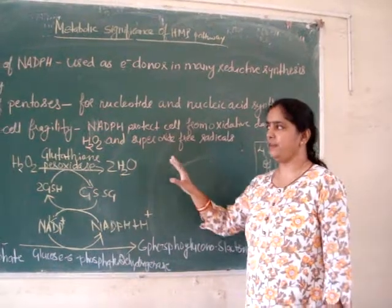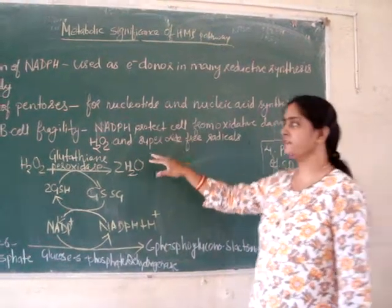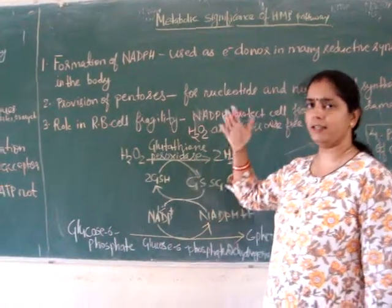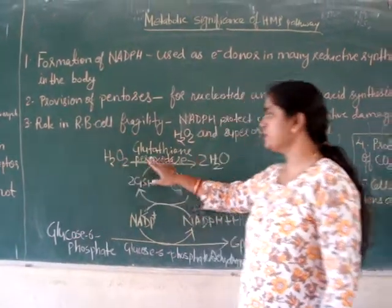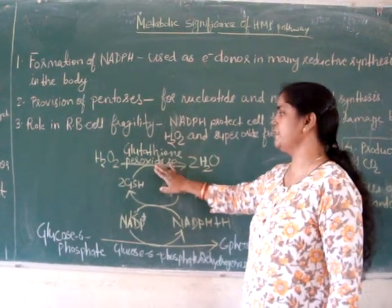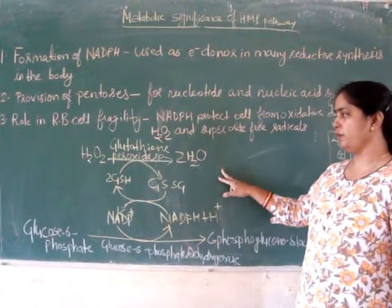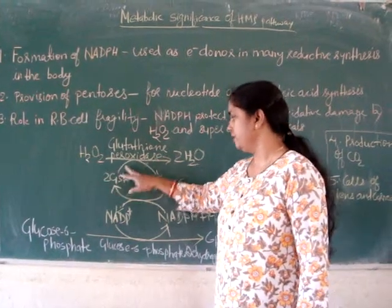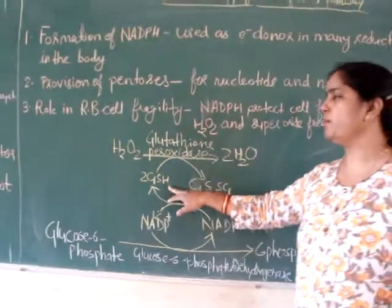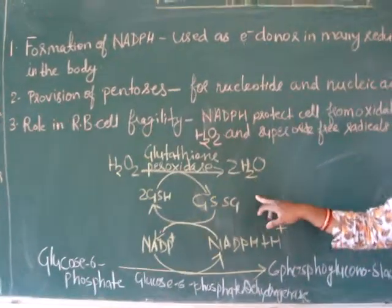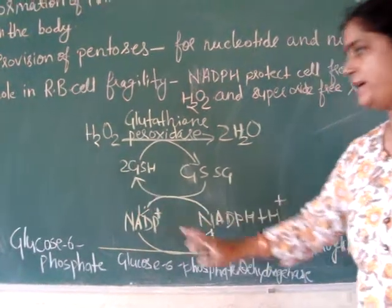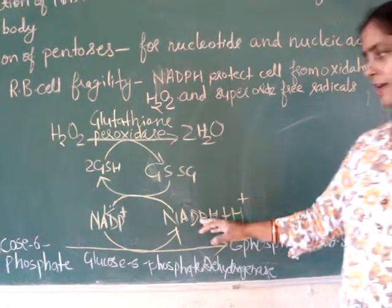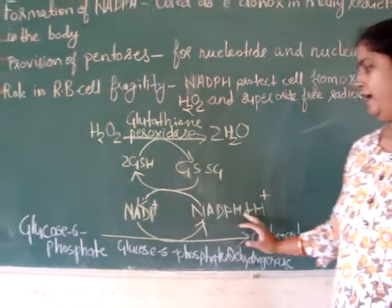We can see here the role of NADPH in red blood cell integrity. Hydrogen peroxide produced through different metabolic reactions in red blood cells is broken down into two molecules of water in the presence of glutathione peroxidase enzyme. Glutathione is oxidized to its oxidized form, and this oxidized glutathione is then converted back into its reduced form.